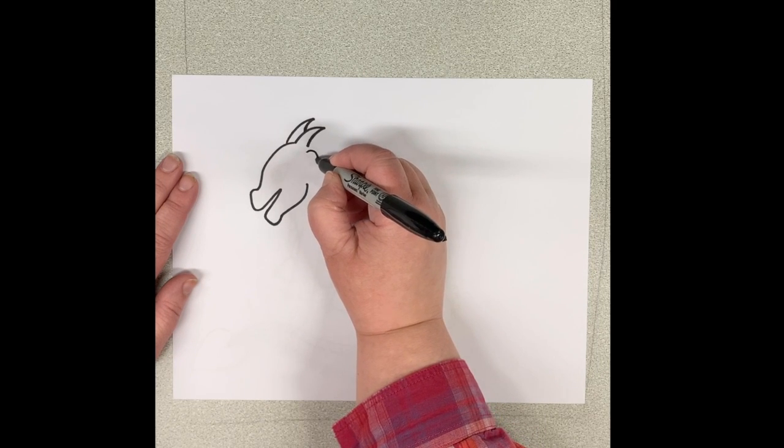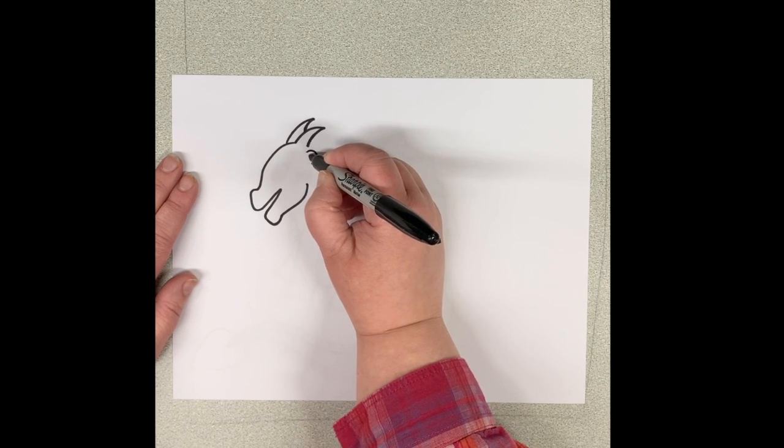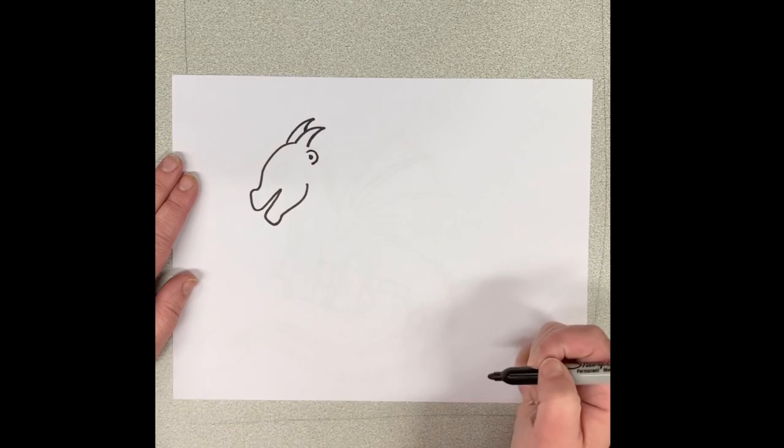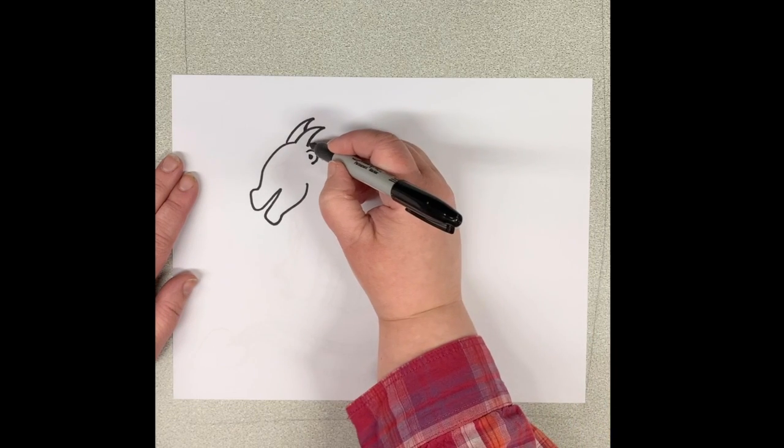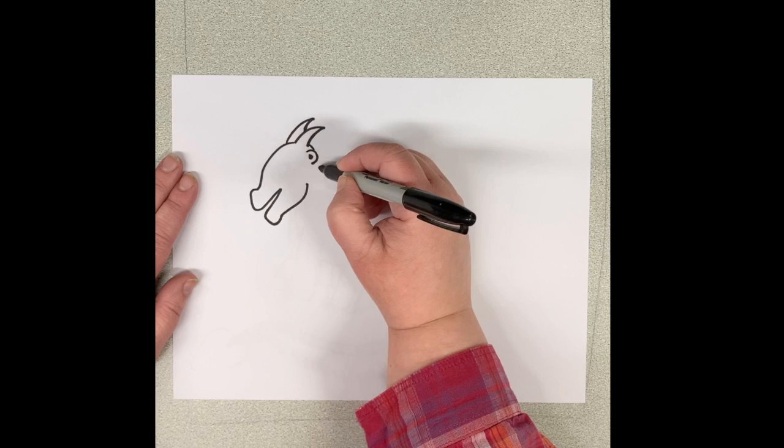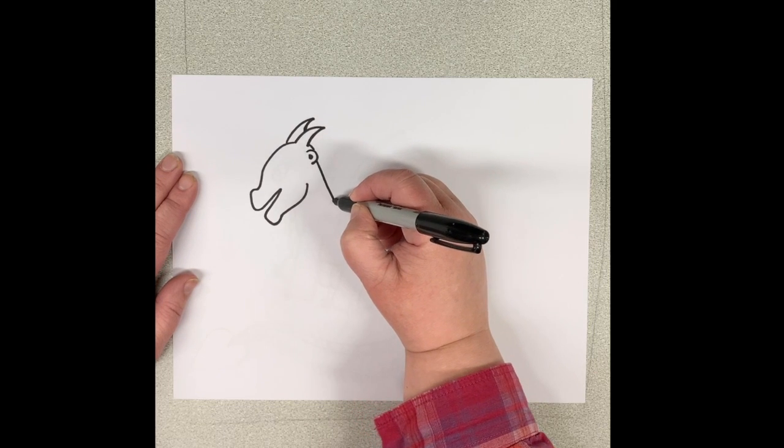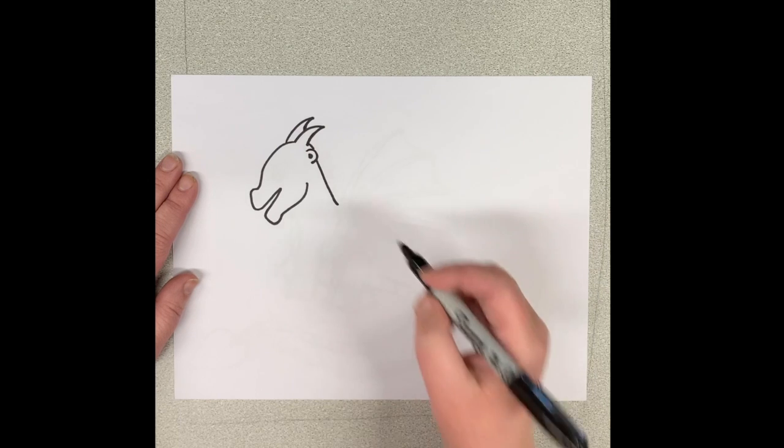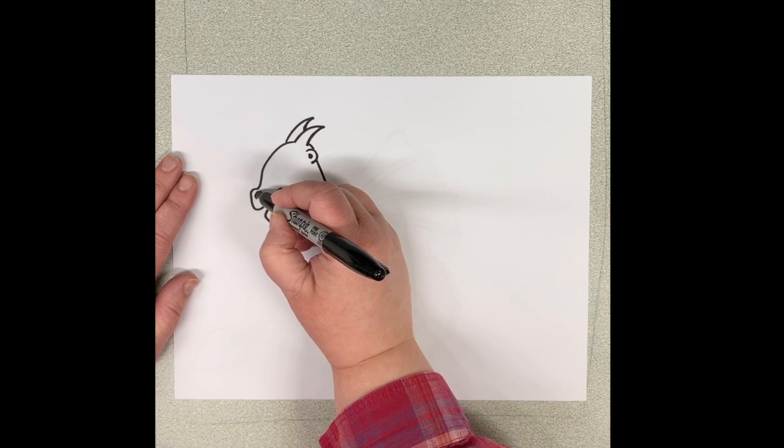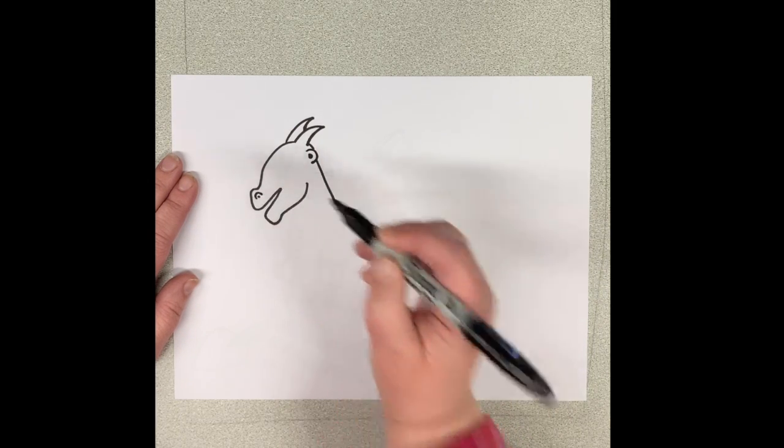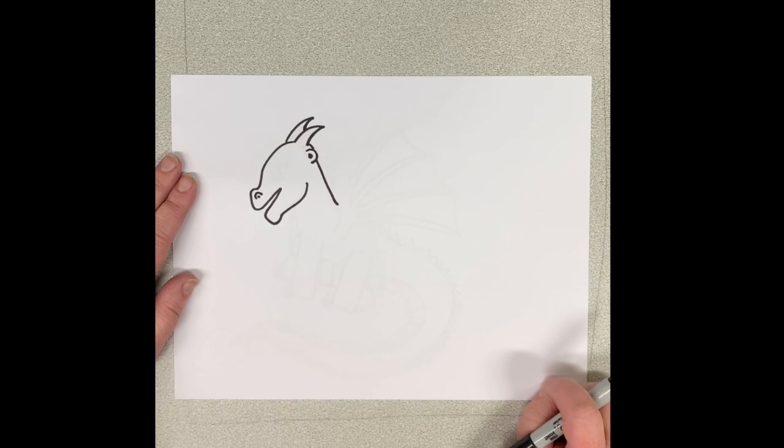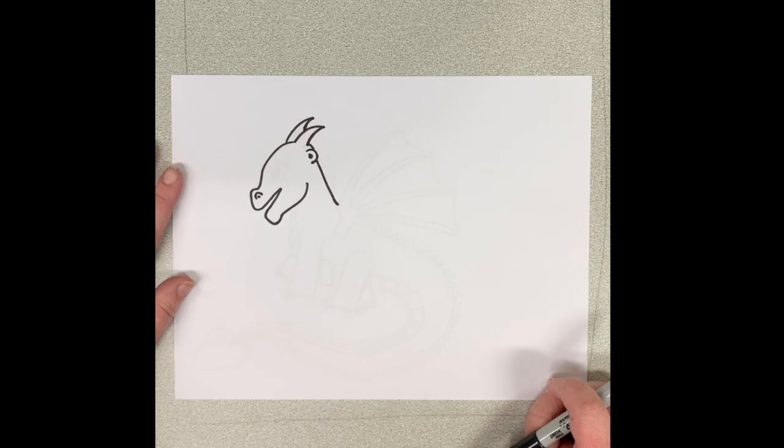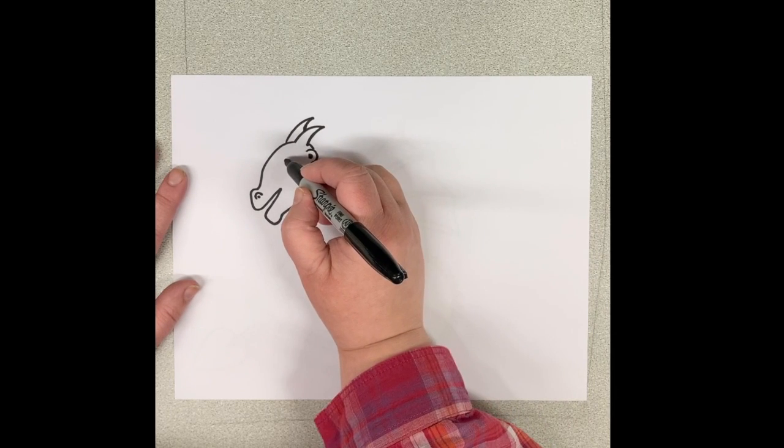Next we're going to add his ear. And then draw in the back of his head, going down for his neck. Now we'll draw in his nose. And add an eye.